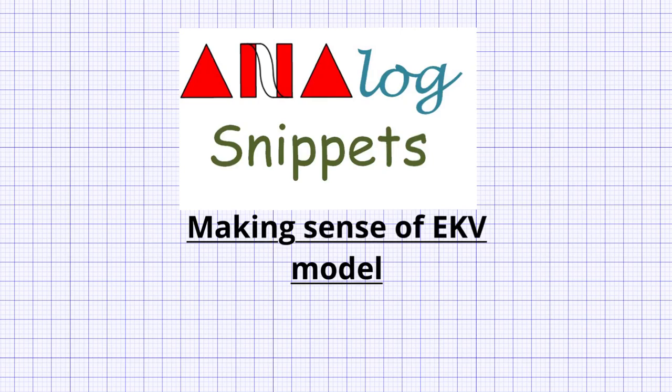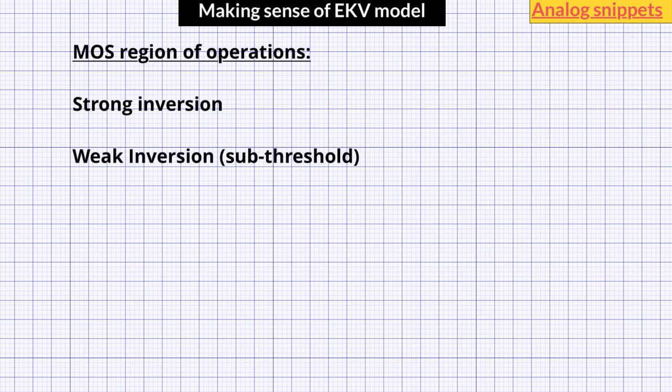Hello everyone. Welcome back to analog snippets. A MOS device has three regions of operation. By far the most popular is strong inversion, followed by weak inversion or sub-threshold operation, and the last is the region between these two called moderate inversion.